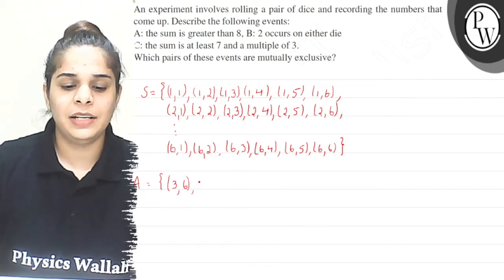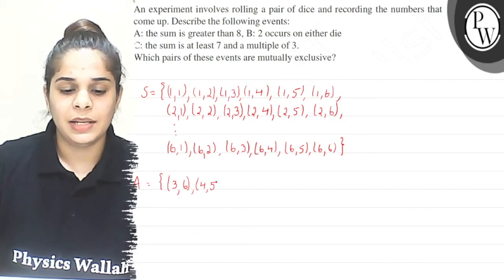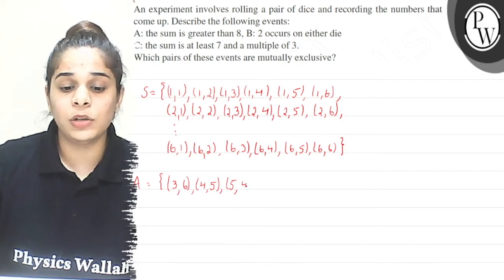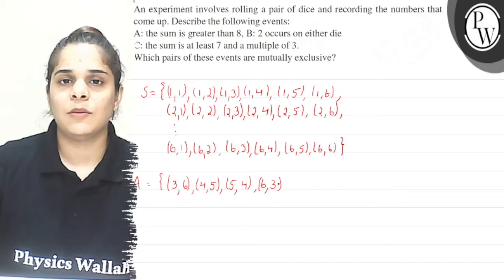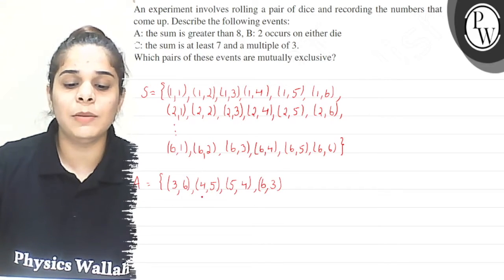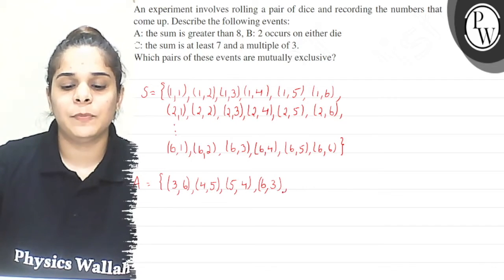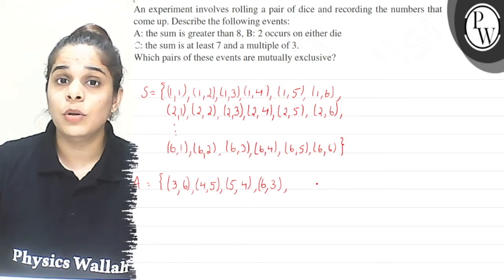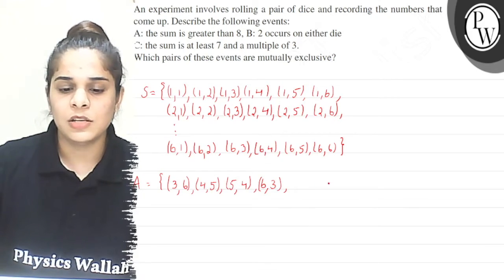Next, for first die = 4, I get (4,5) with sum 9. For 5, I get (5,4). For 6, I get (6,3). Those are the only possibilities for sum = 9. Now for sum = 10: starting from 4, I get (4,6). Can't start from 1 because the second die would need to show 9, which is not possible.